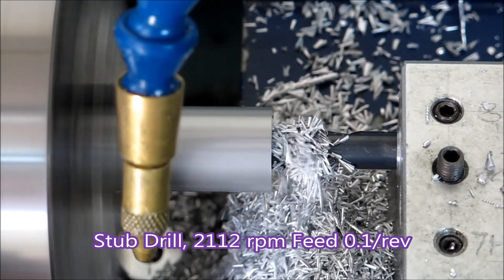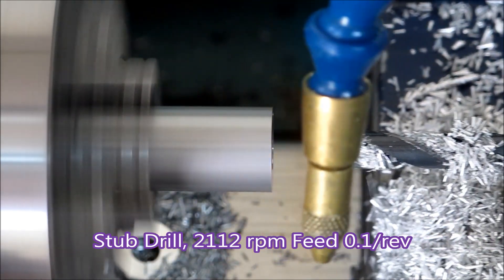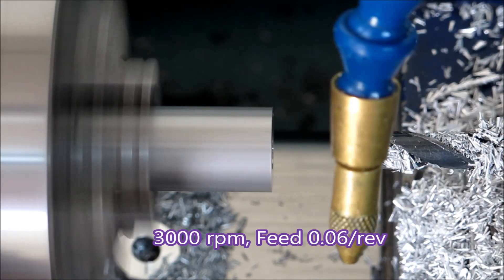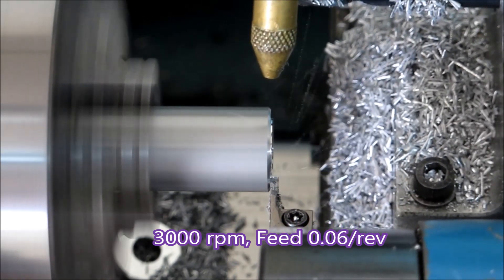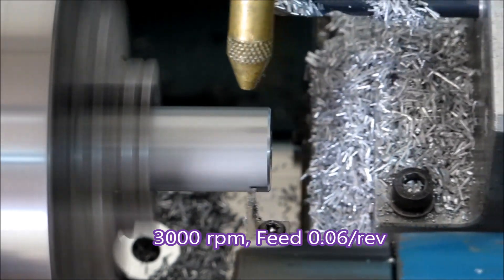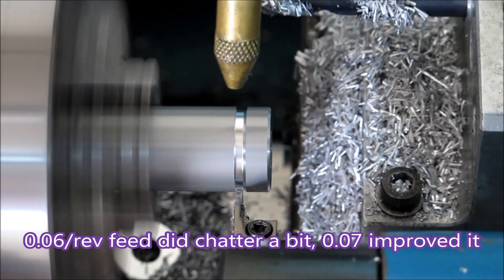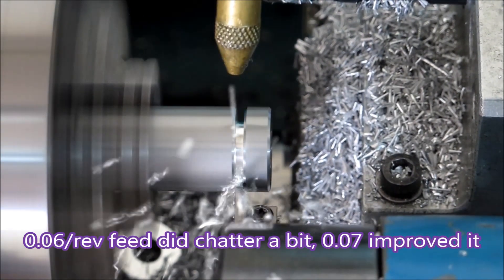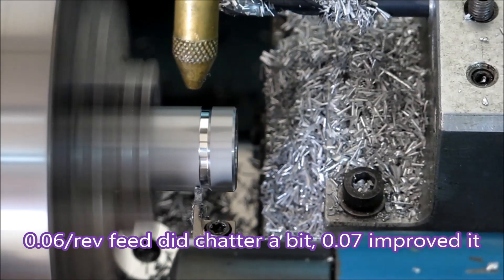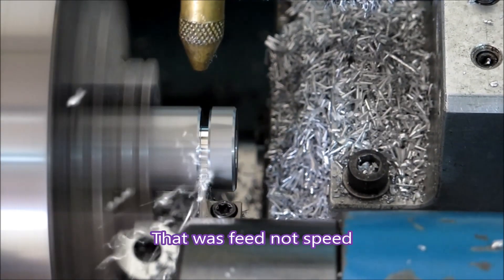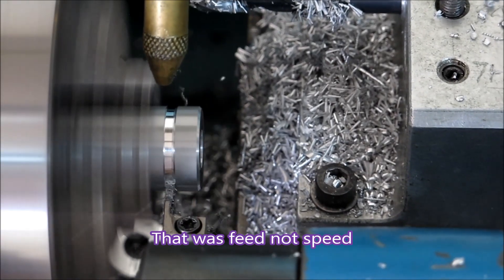2112 RPM - that's the speed that was suggested by the chart I use with speeds and feeds on it, so that's exactly what I used. After I'd finished the video, I upped the speed a bit to 0.07 and the chatter was decidedly less.